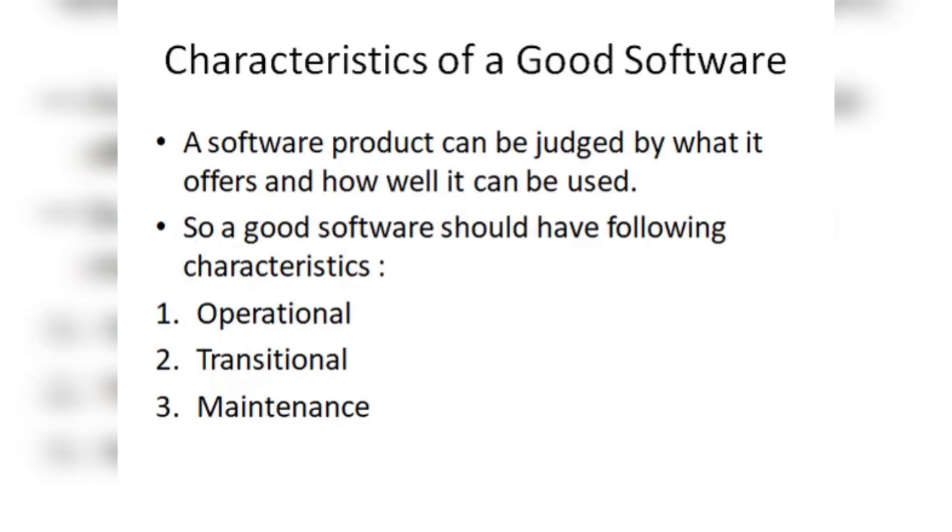This is our next topic: software characteristics. In our previous lecture we understood what software is, how it is different from hardware, and we formed a basic definition of software engineering. In this lecture we will understand the basic characteristics of software, which will help us understand software engineering in a better way. Let us start the lecture — what are the basic characteristics of a good software?